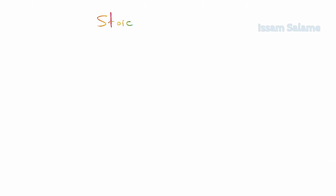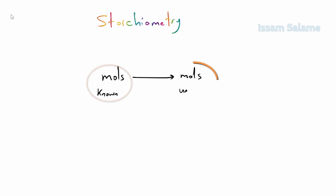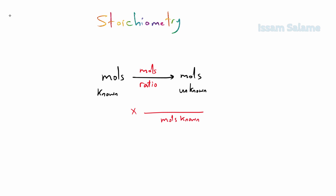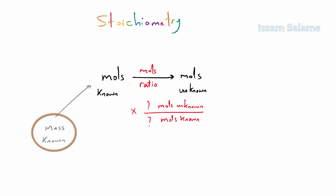Let me summarize all the procedures for solving stoichiometry problems. The simplest is to convert moles of the known quantity to moles of the unknown quantity using the mole ratio — multiplying with a fraction with moles of the known in the denominator and moles of the unknown in the numerator, using coefficients from the balanced equation. But if the given quantity was mass, we must first convert mass to moles using the periodic table, then convert to moles of the unknown.